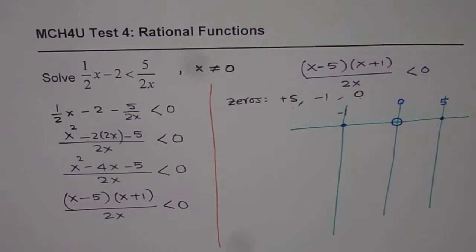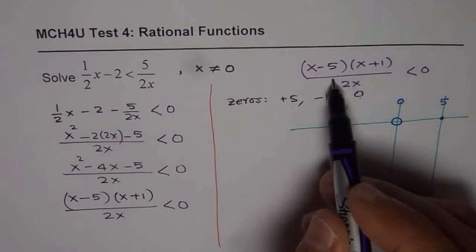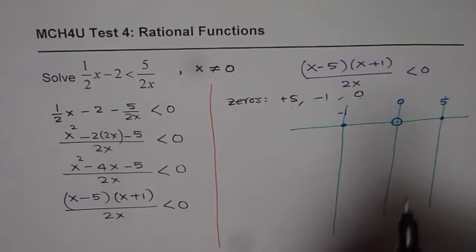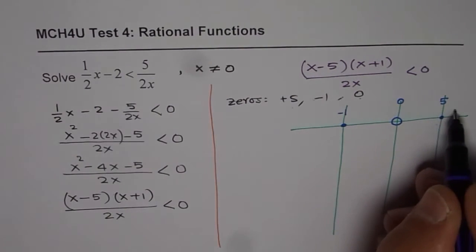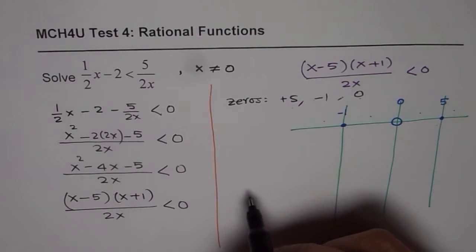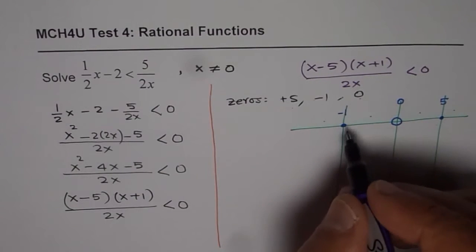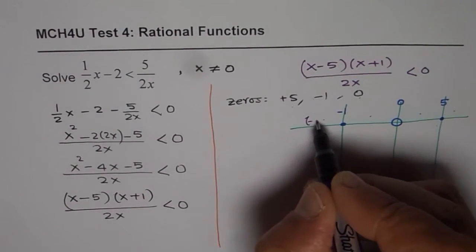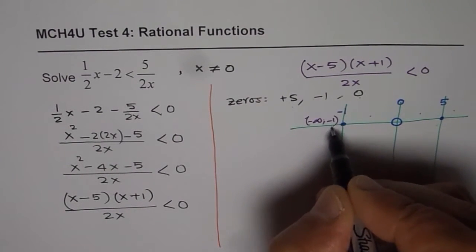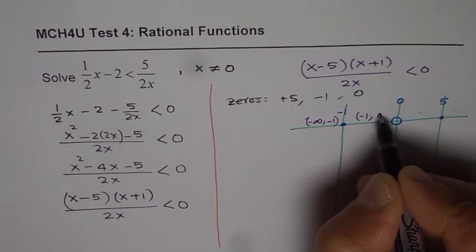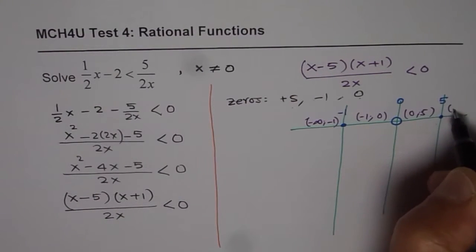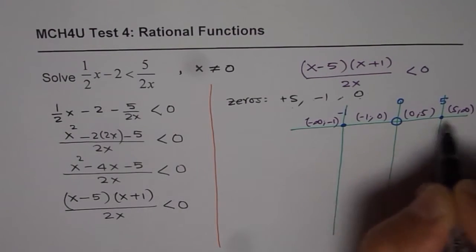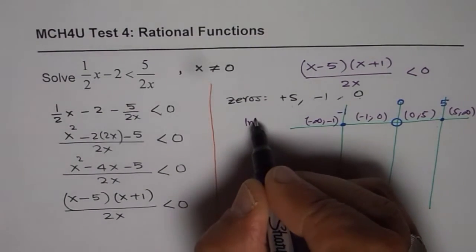Now, these zeros in the numerator and zeros in the denominator divide our plane into 1, 2, 3, 4 parts and these could be written as from minus infinity to minus 1, minus 1 to 0, 0 to 5 and from 5 to infinity. So, these are the intervals.